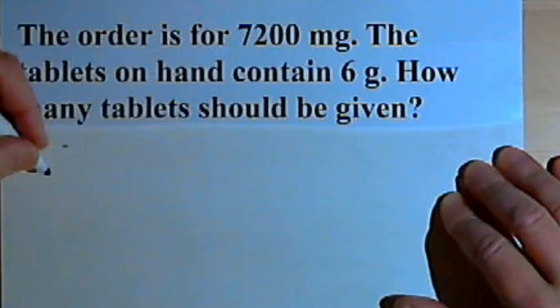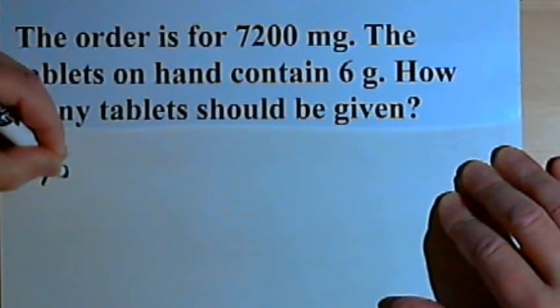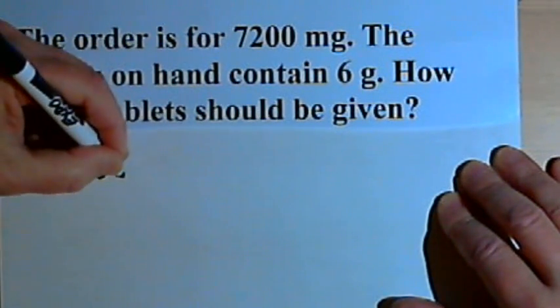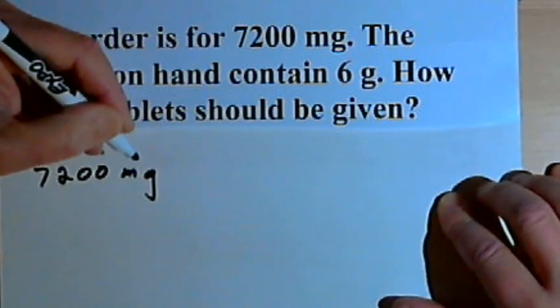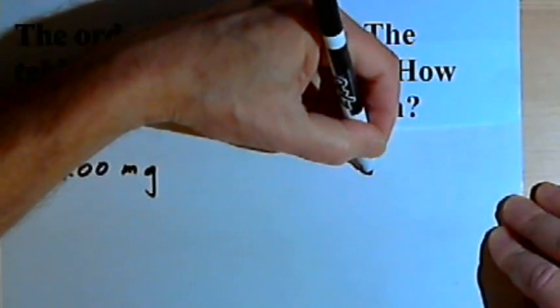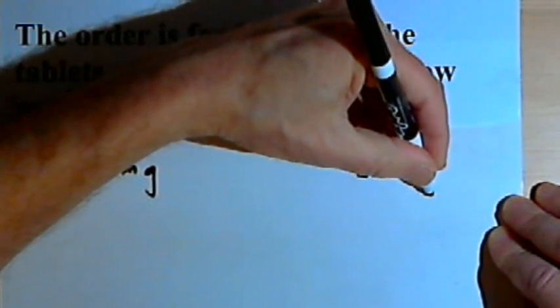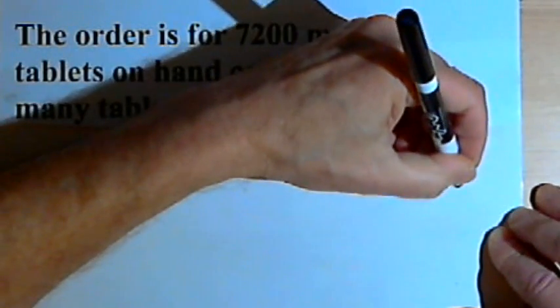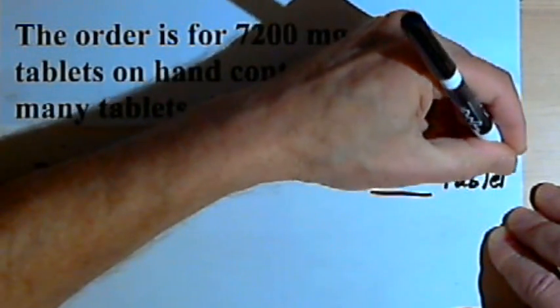So I'm going to set up my equation. The first thing I'll do is write the amount ordered, that's 7,200 milligrams. At the right side of the equation, I want to leave a space for my answer and the unit I'm going to have, which is the number of tablets.